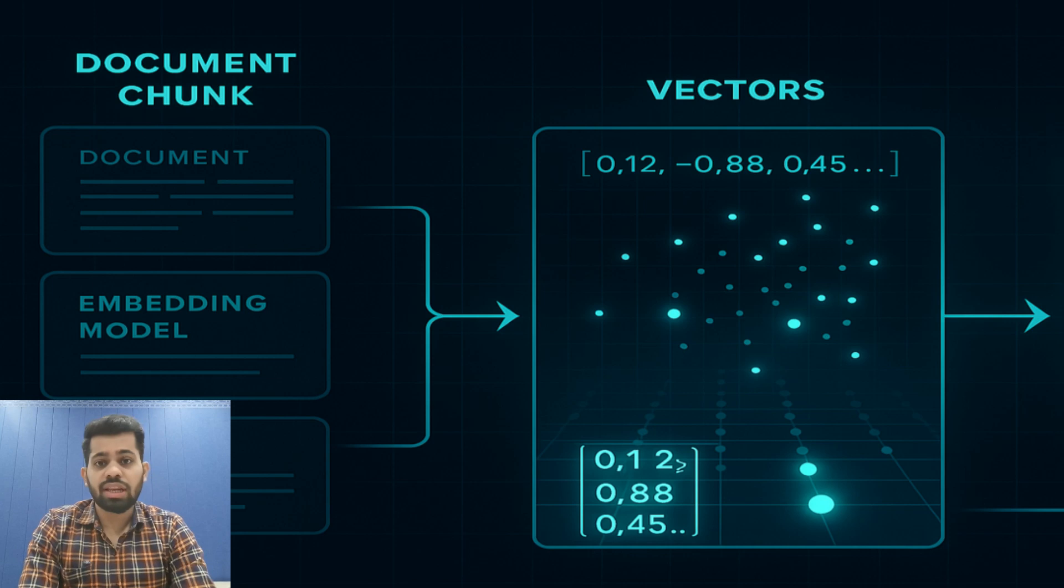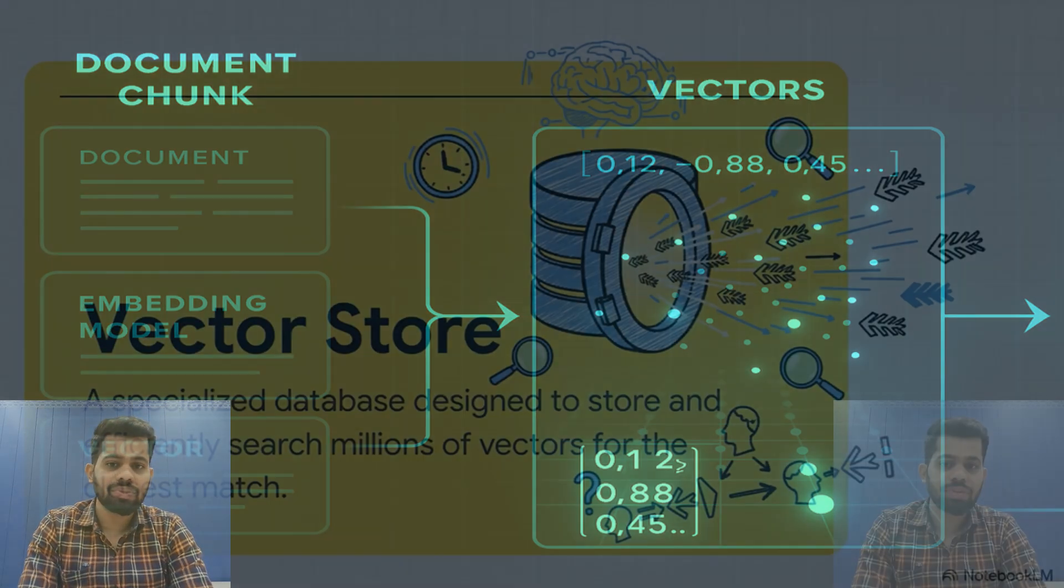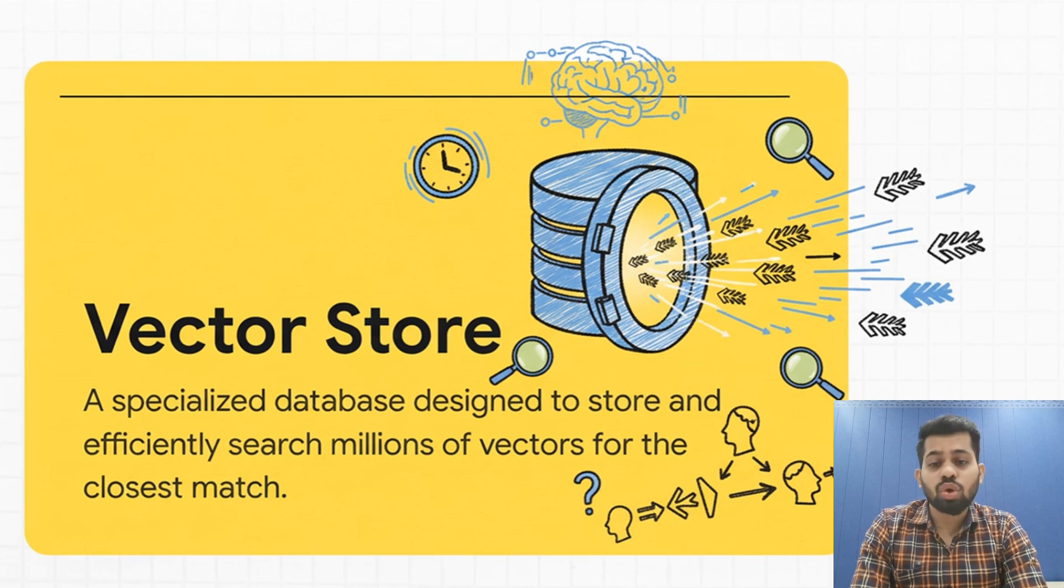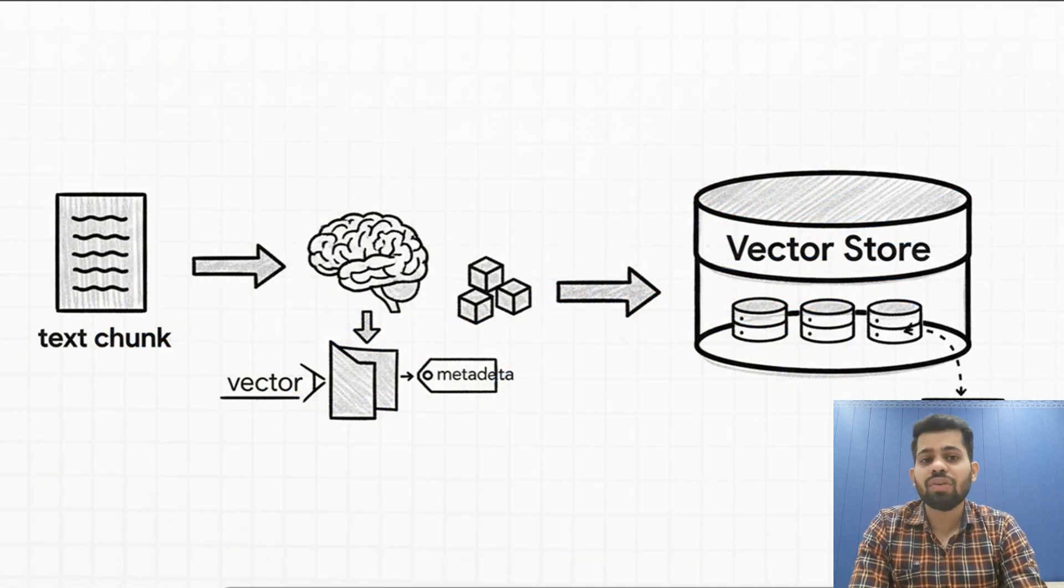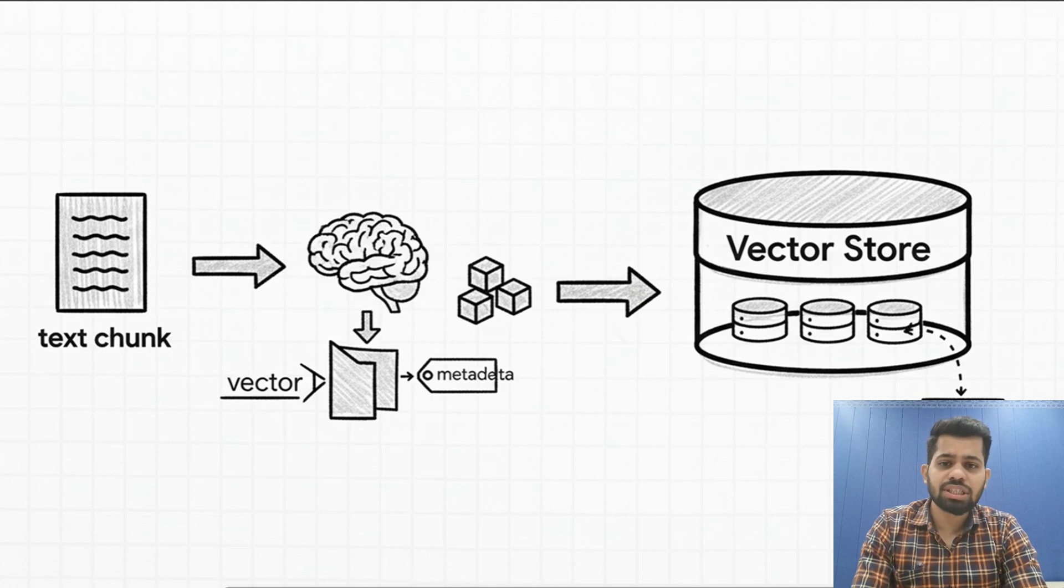Once your documents go through the embedding model, each chunk becomes a dense, high-dimensional array of numbers called vectors. You can think of vectors like a numerical fingerprint of the text's meaning. Text with similar meaning will have vectors close to each other in this high-dimensional space, but you are not done yet. You need to store these vectors somewhere you can search them efficiently.